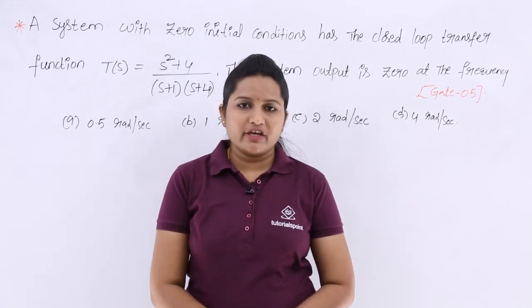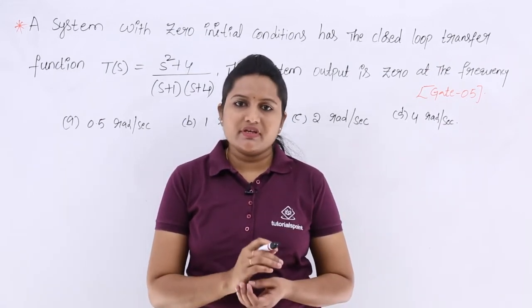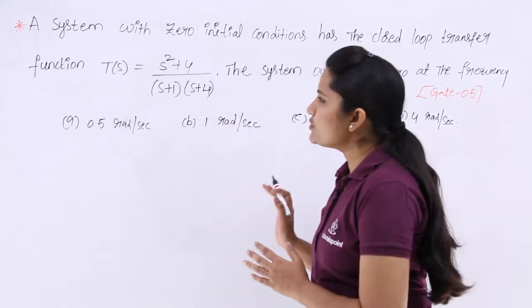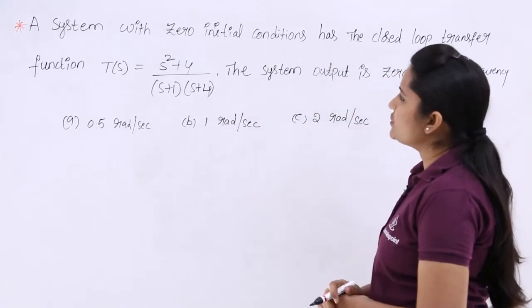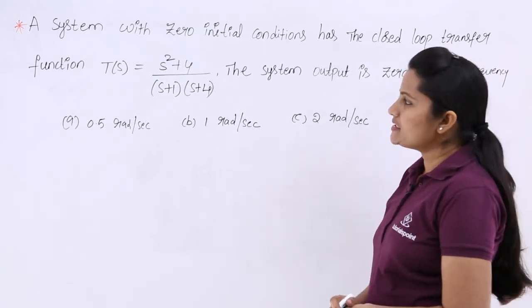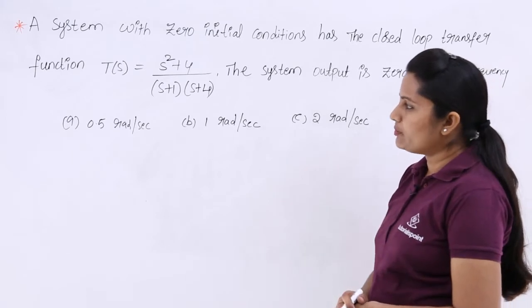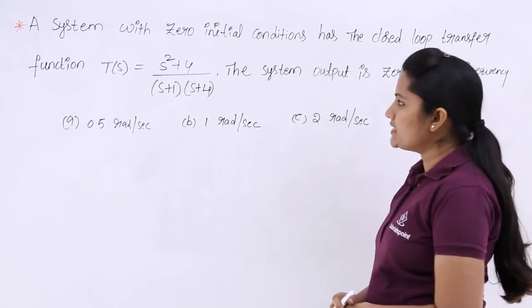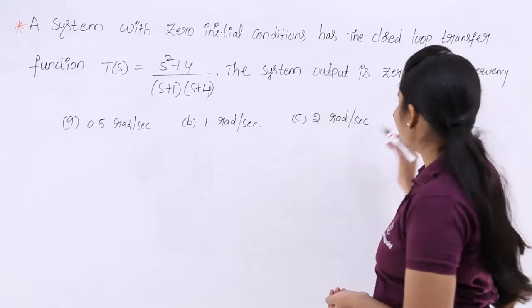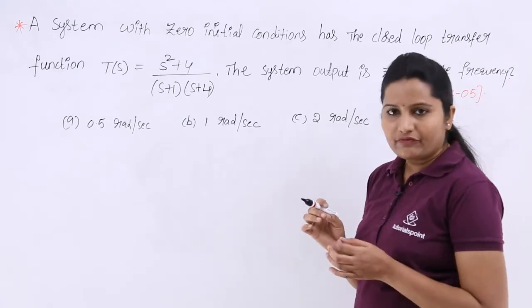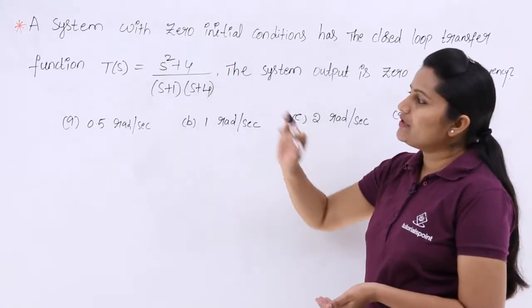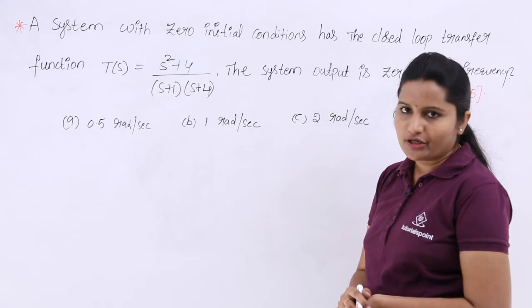In this video, we are going to discuss a previous GATE problem related to system response. A system with zero initial conditions has the closed loop transfer function T(s) equal to (s² + 4) divided by (s + 1)(s + 4). The system output is zero at some frequency — we need to find out that frequency.